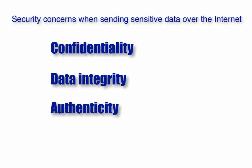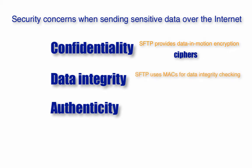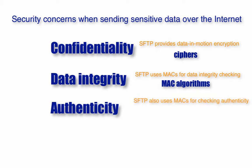SFTP already comes with algorithms that help you meet these objectives. To preserve confidentiality during transmission, SFTP provides data in motion encryption — the various algorithms used for this purpose are called ciphers. To perform data integrity checks and discover possible modifications in the data, SFTP uses what are known as message authentication codes or MACs. The algorithms designed for this are aptly called MAC algorithms. Authenticity checks are also carried out using MACs, so the algorithms used for that task are also the MAC algorithms.